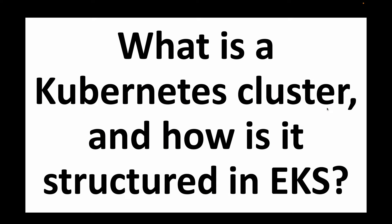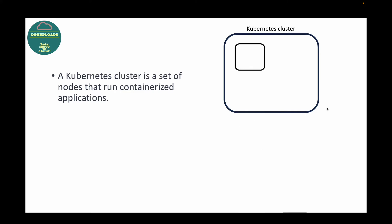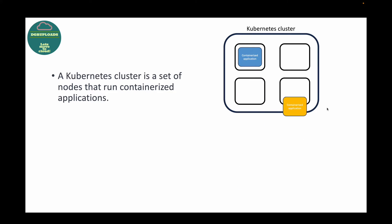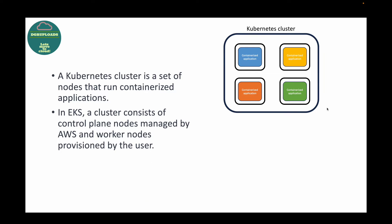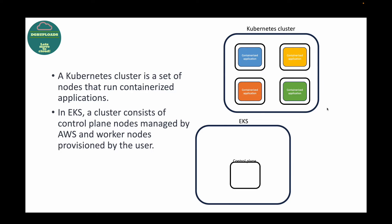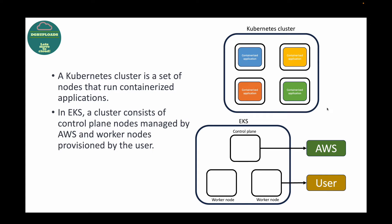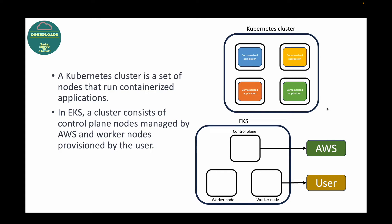The next question is: what is a Kubernetes cluster and how is it structured in EKS? A Kubernetes cluster is simply a set of nodes where we run our containerized applications. To make applications highly available, it is recommended to run them on multiple nodes, and this collection of nodes together is called a Kubernetes cluster. In EKS, the cluster consists of a control plane managed by AWS and worker nodes provisioned by the users.